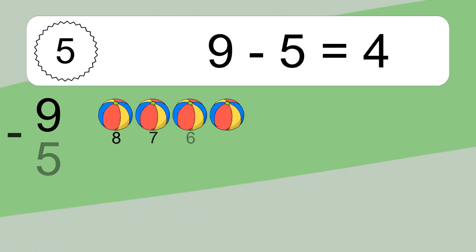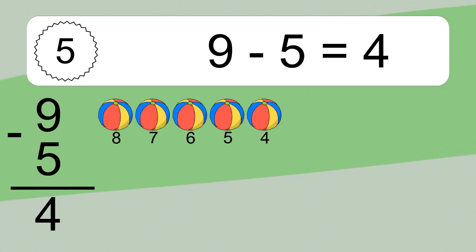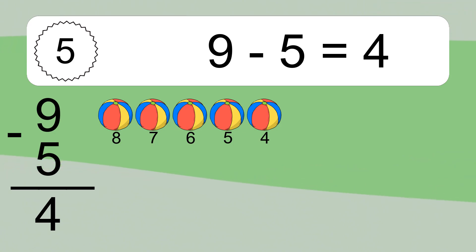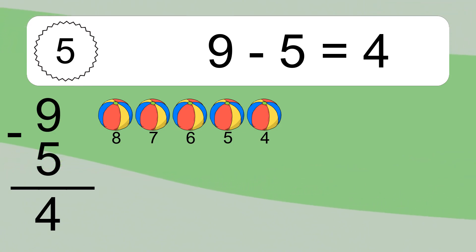9 minus 5 equals what? 9 minus 5 equals 4. Let's count it. 8, 7, 6, 5, 4.